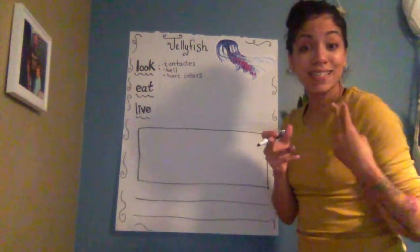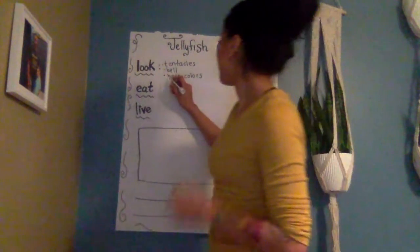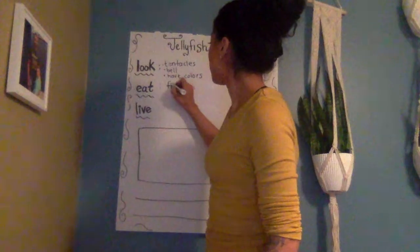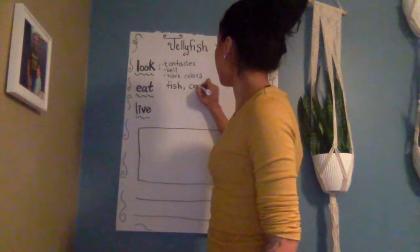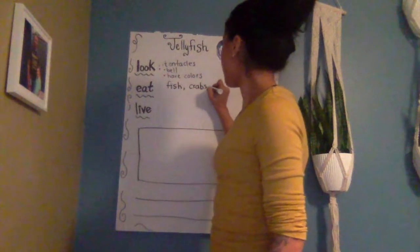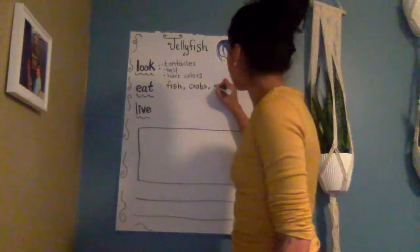What does a jellyfish eat? Do you remember? Jellyfish eat fish, they eat plants, they eat shrimp and crabs, and their mouth is in the middle of their body — remember that. So we are going to write that they eat fish and crabs and shrimp and plants.